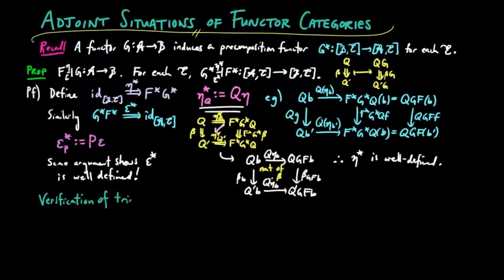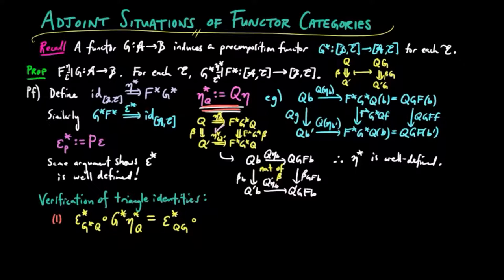The verification of the triangle identities is straightforward. We have ε*(G*Q) ∘ G*(η*Q), which equals ε*(QG) ∘ G*(Qη), by definition of G* on object Q and the definition of η*. And this equals QG·ε ∘ Q·ηG, by definition of G* on the morphism Qη.